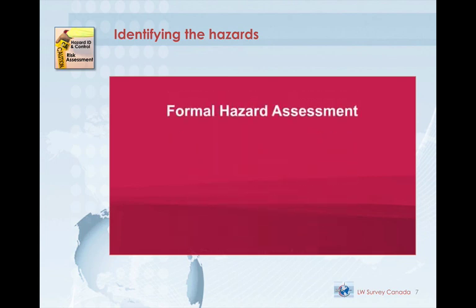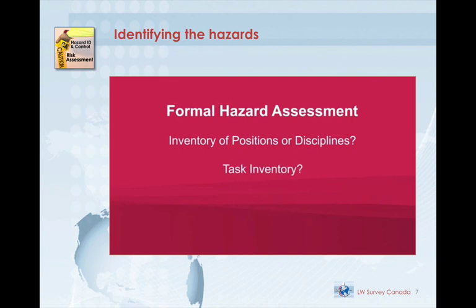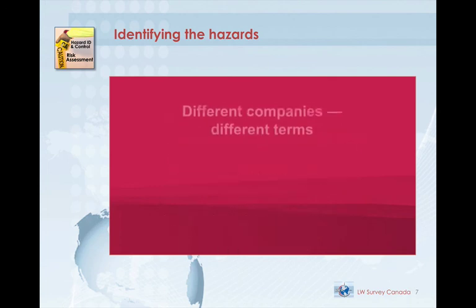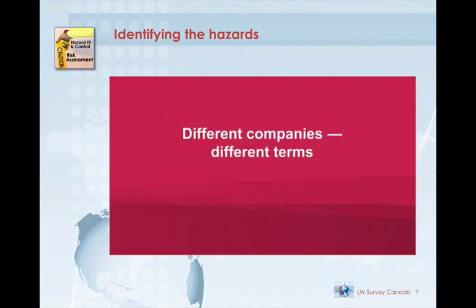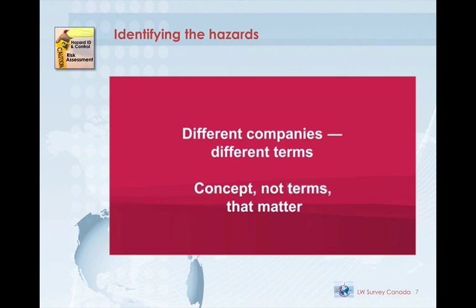Let's start with the formal hazard assessment. In Element B, auditors are asked to score a company's hazard assessment system based on whether they have an inventory of positions or disciplines, whether they have a task inventory, whether they have identified and assessed each health and safety hazard for every task, and whether those hazards have been prioritized. Different companies may use a variety of terms to talk about the same thing. It is the concept, not the terms, that matter — you need to understand the concept to accurately judge a company's hazard assessment systems.